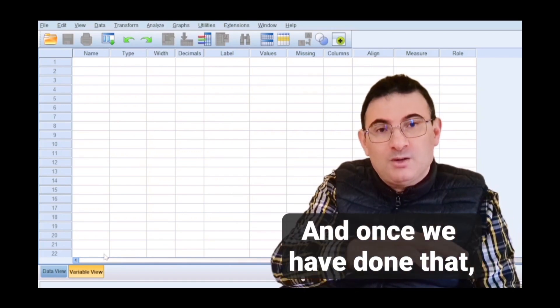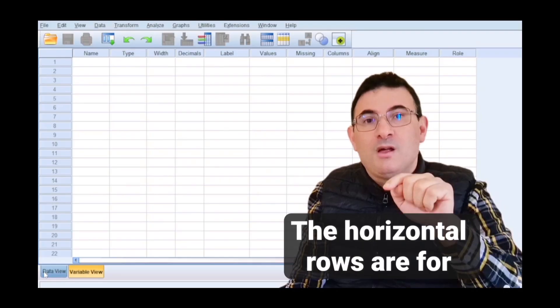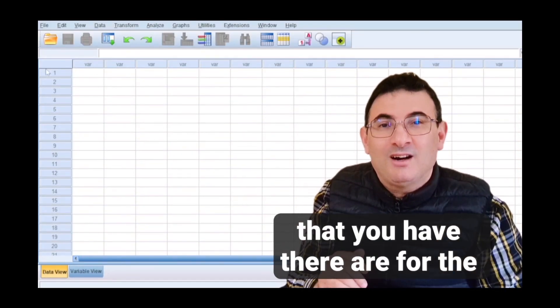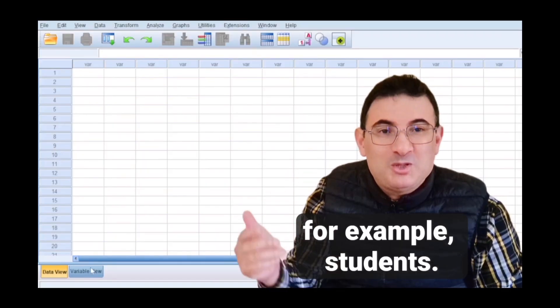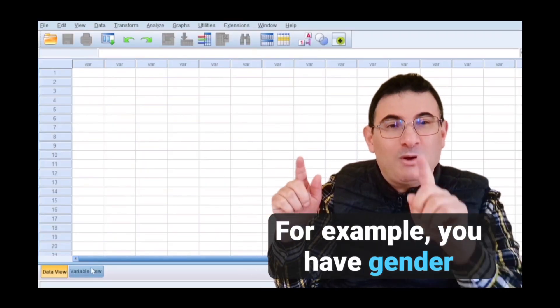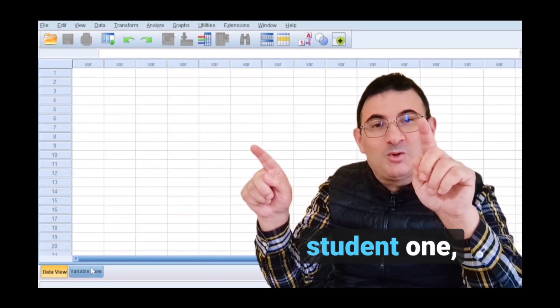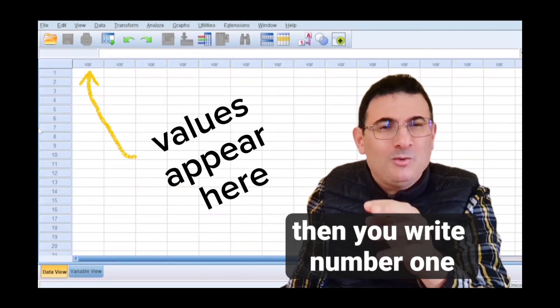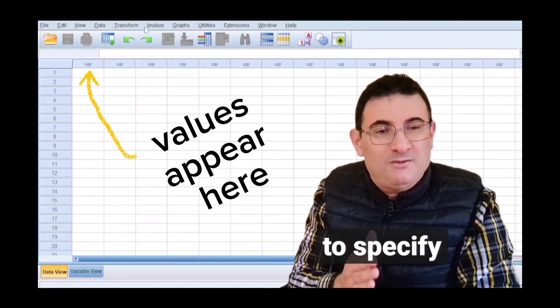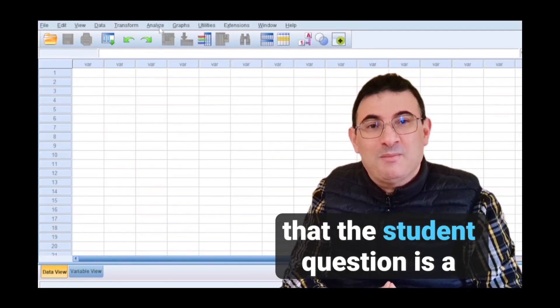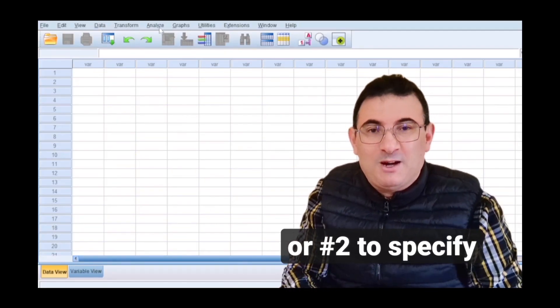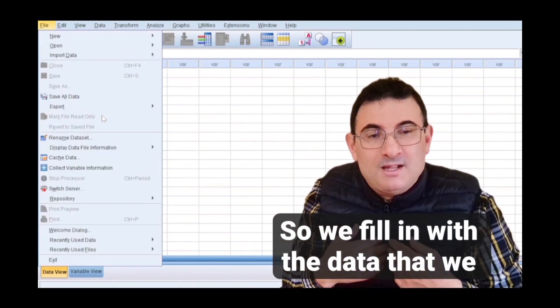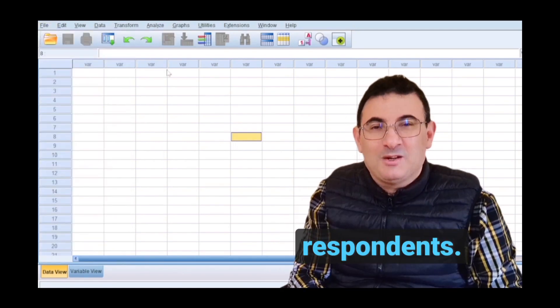And once we have done that, we move on to the data view. The horizontal rows are for variables, and the vertical numbers that you have there are for the cases. For example, students. You have gender variable, and then you have student one, student two, student three, student four. If student one is a male, then you write number one or number two or any other number, just to specify that the student in question is a male. Or number two, to specify that the student in question is a female, and so forth. So we fill in with the data that we have obtained from our respondents.